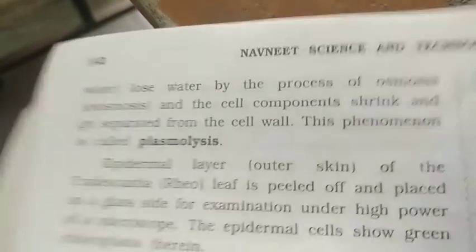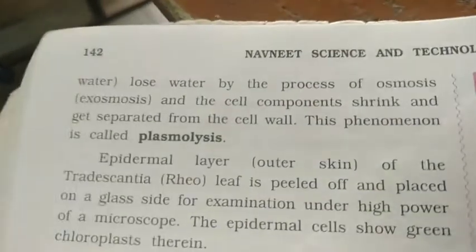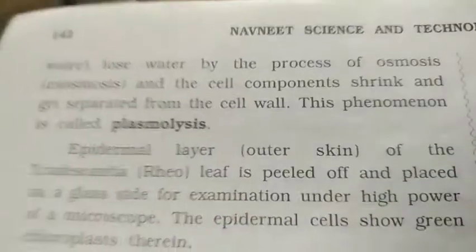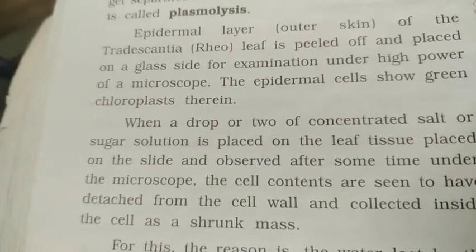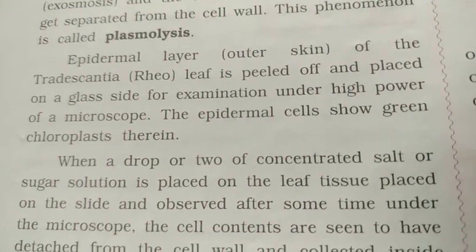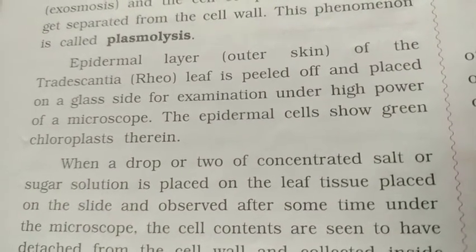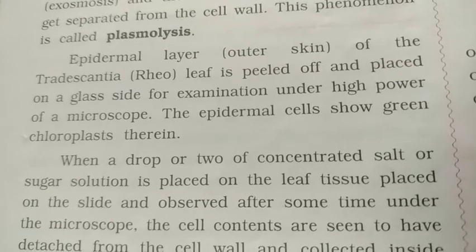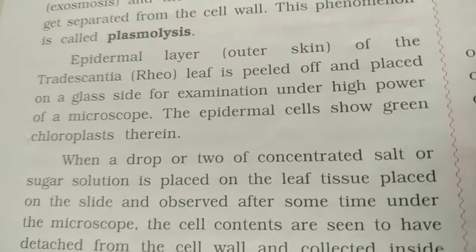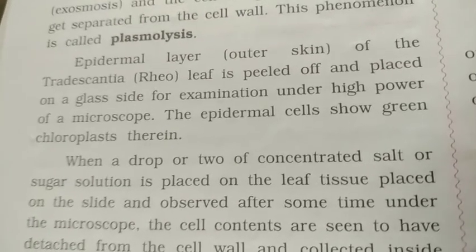The cell components shrink and separate from the cell walls. The epidermal layer — meaning the outer skin — of the Tradescantia leaf is peeled off and placed on the glass slide for examination under high power of the microscope.